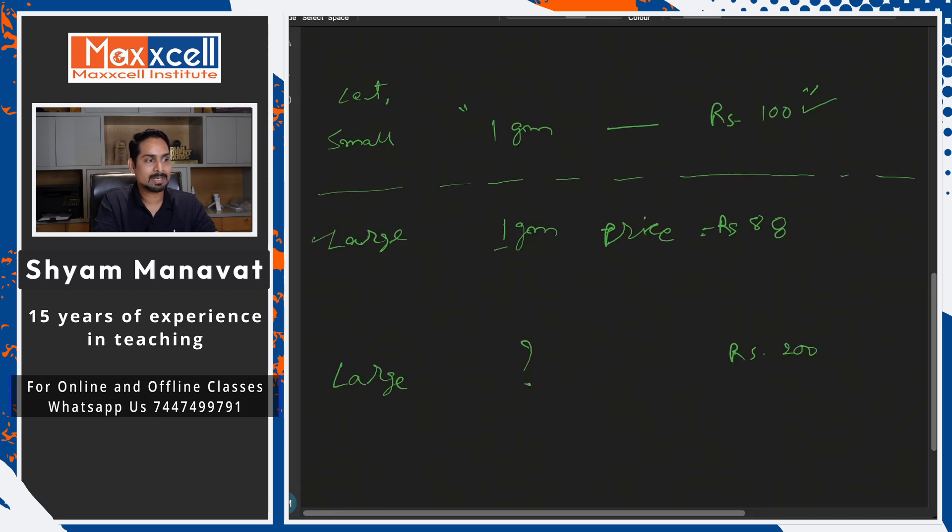So for the large box, 1 gram is costing 88 rupees. Then for the large box, how much weight should cost 200 rupees? Can you do this? We do this with cross multiplication. What is it called? Chain rule. Yes, chain rule.